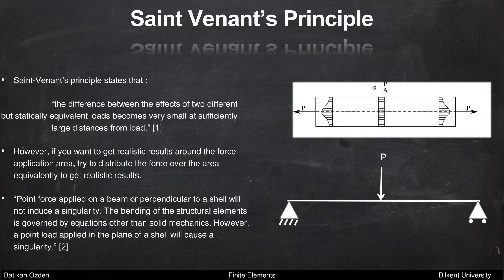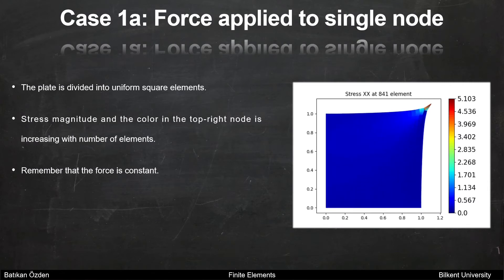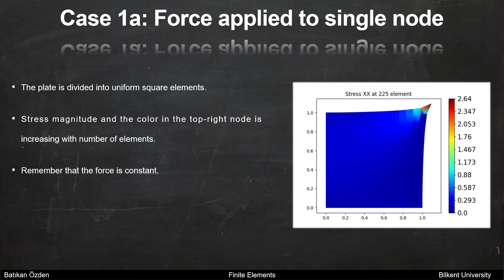In this video, I will show you several cases with stress singularities. For case 1a, we have a 2D 1-by-1 unit square structure. Element quantities are varying from 25 to 1225. A constant force of 0.1 with a 45-degree angle with the horizontal is applied to the single top right node, and the left edge is constrained from x and y directions. Notice the stress magnitude and color in the top right corner node — although the force is constant, the stress is increasing and the color turns red. The stress is increasing at each step and it gets more localized.